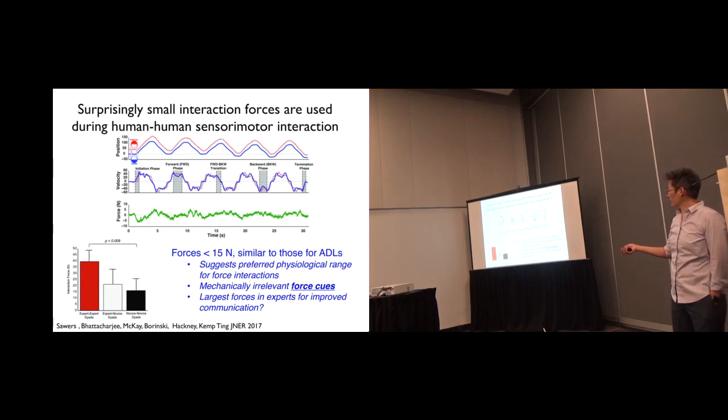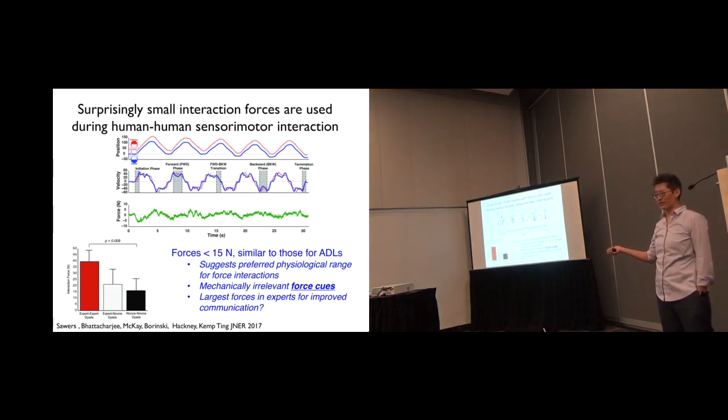And interestingly, the experts had much higher peak forces than the novices when they were together. So this goes back to what Dagmar was saying, that you might want better communication, more predictable. I want my message to get through if I'm an expert rather than to reduce the amount of force that I'm having to use.